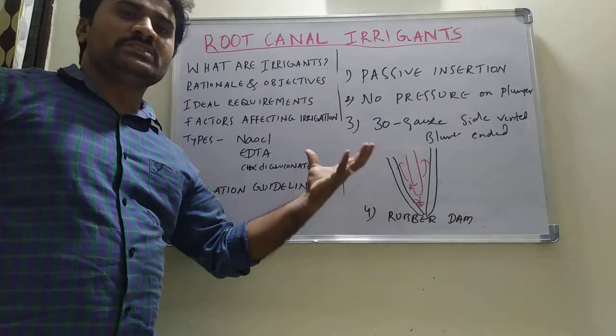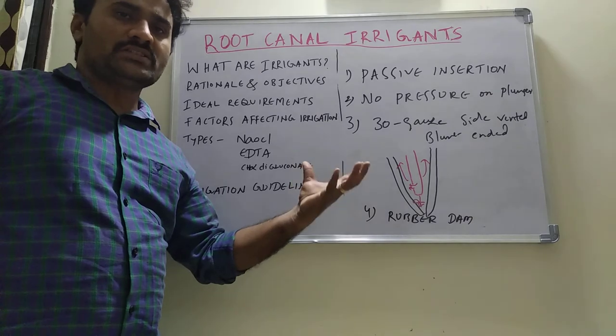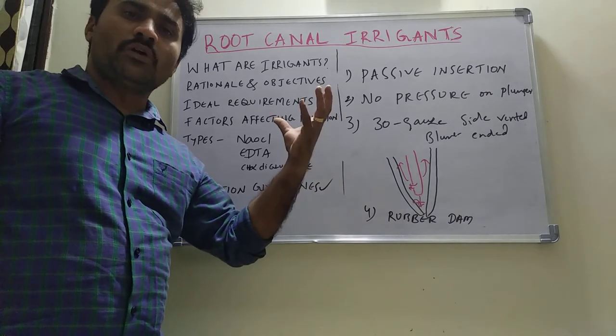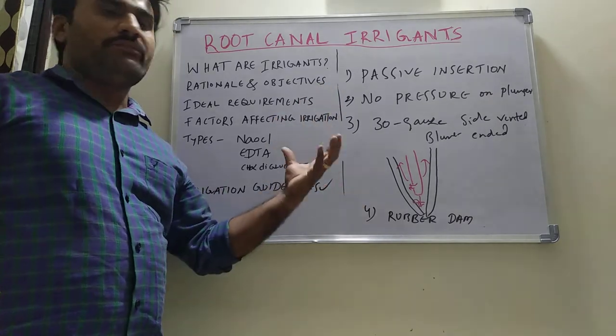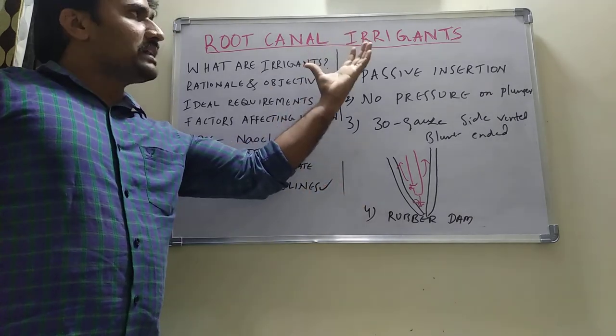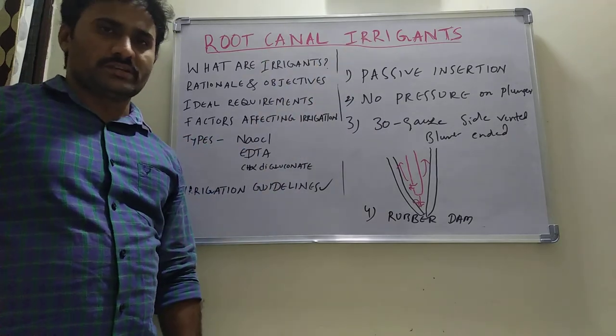Volume, concentration, and frequency of irrigation are the main important factors affecting the efficacy of the irrigation procedure.